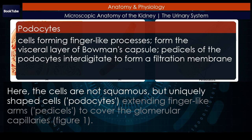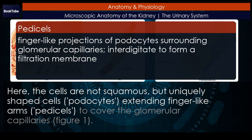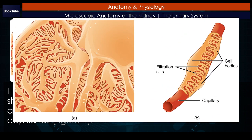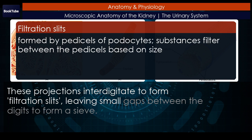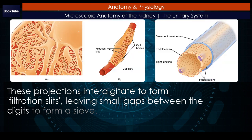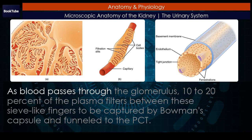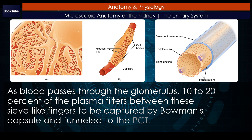Podocytes, extending finger-like arms called pedicels, cover the glomerular capillaries. (Figure 1.) These projections interdigitate to form filtration slits, leaving small gaps between the digits to form a sieve. As blood passes through the glomerulus, 10–20% of the plasma filters between these sieve-like fingers to be captured by Bowman's capsule and funneled to the PCT.